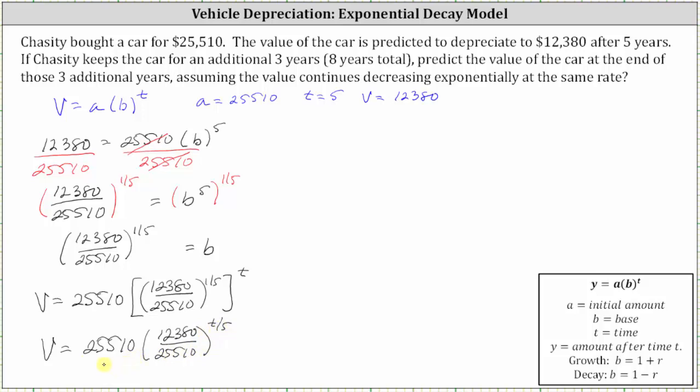And now we can find the value after eight years by substituting eight for t. So the value after eight years is equal to 25,510 times 12,380 divided by 25,510 raised to the power of eight-fifths. And again, we're substituting eight for t.